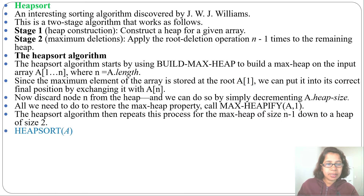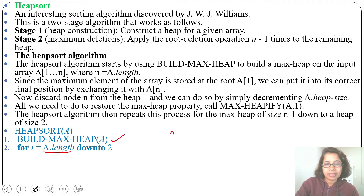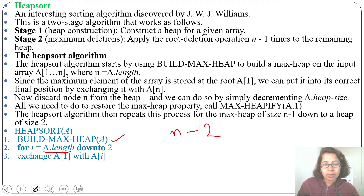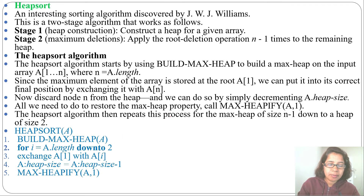The HeapSort algorithm: given array A, first step is buildMaxHeap to create the heap. Then for i from A.length down to 2, exchange A[1] with A[i] — A[1] is the root — then heap size becomes heap size minus 1, decreasing the heap size. Next call MaxHeapify(A, 1) to again restore the heap property.